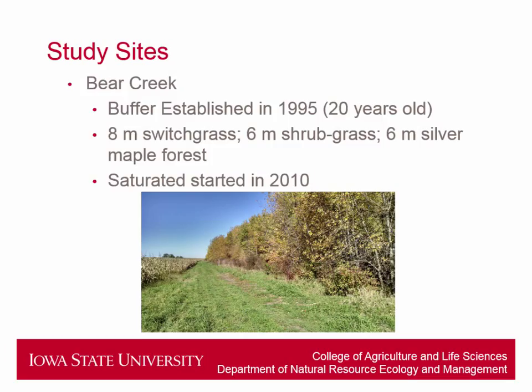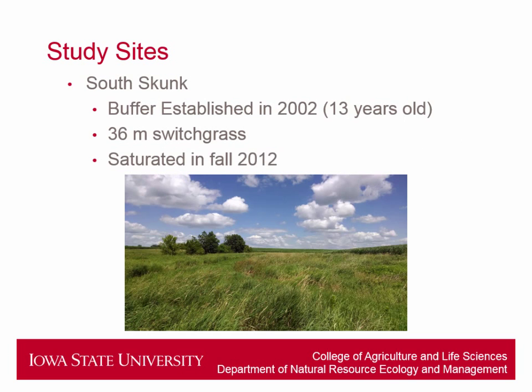The first eight meters from the cornfield edge to the tree line is in switchgrass. The next six meters was a shrub-grass zone, though now silver maple has taken it over and it's one big wooded area. The rest, about six meters, is in silver maple forest. Saturation of this buffer started in 2010. The South Skunk site buffer was established in 2002, so it is 13 years old. It is in just switchgrass — 36 meters of switchgrass from the corn edge to the tributary — and saturation started in 2012.